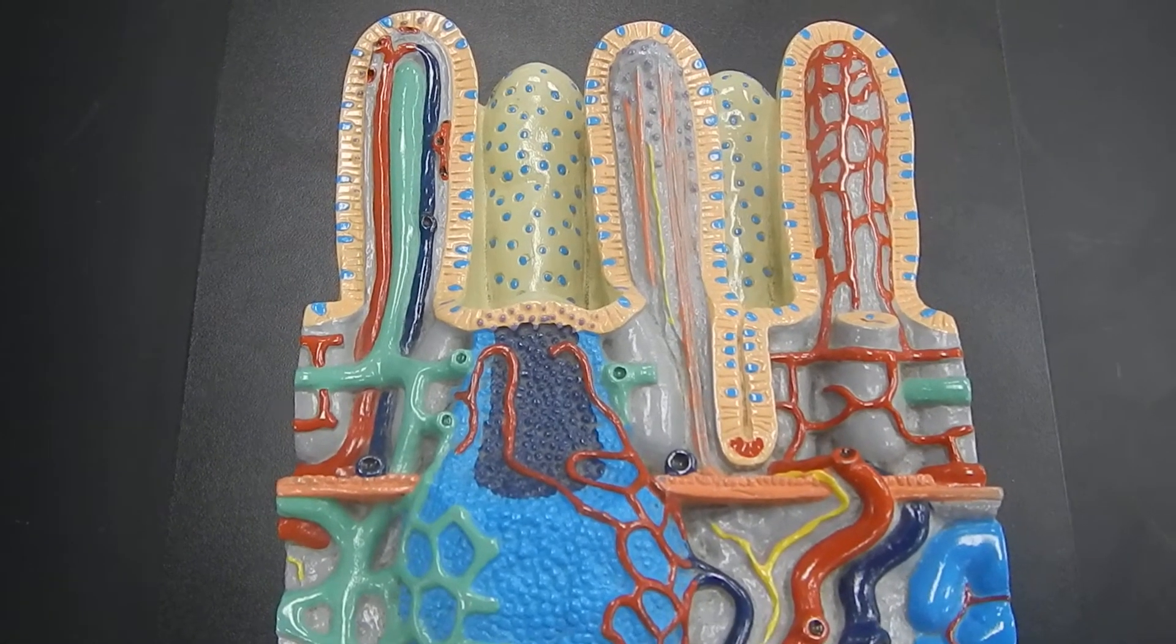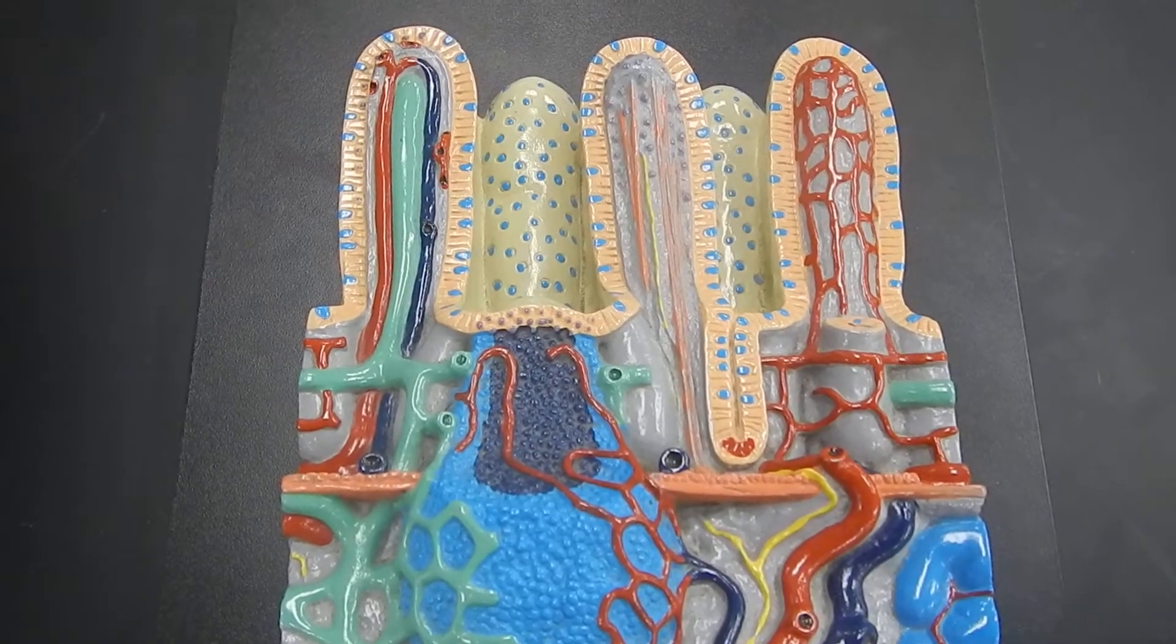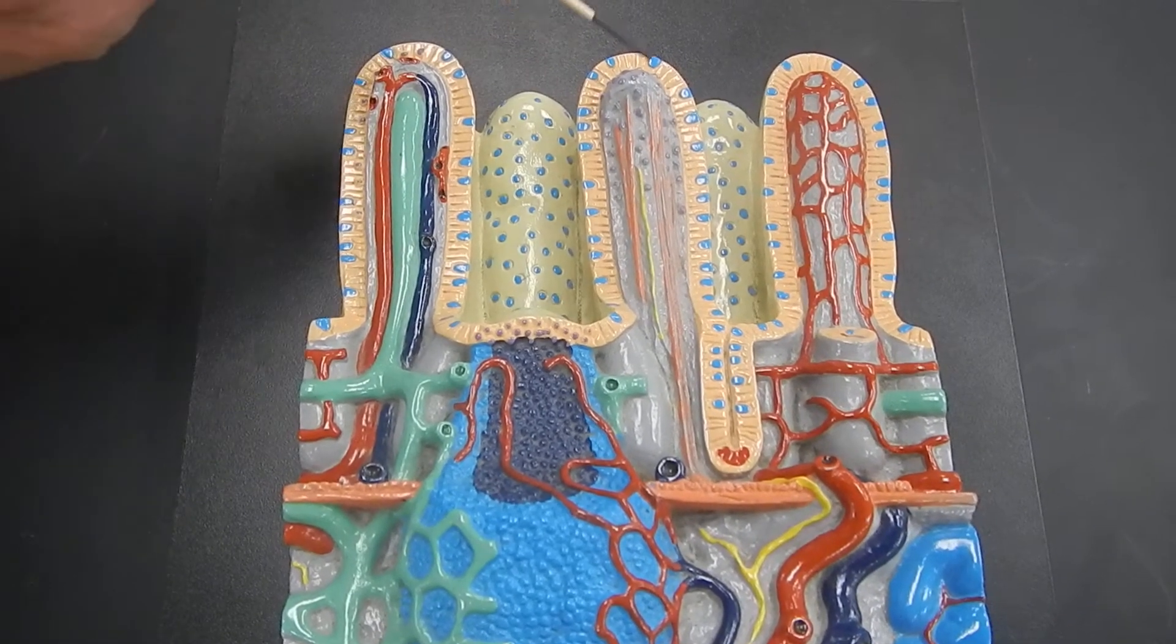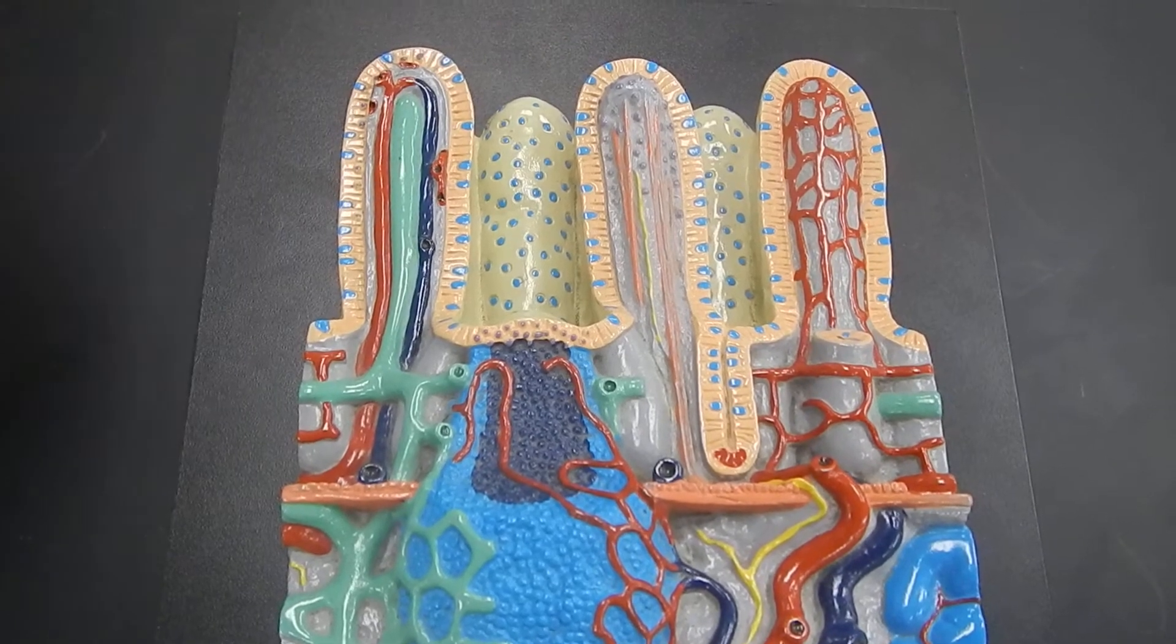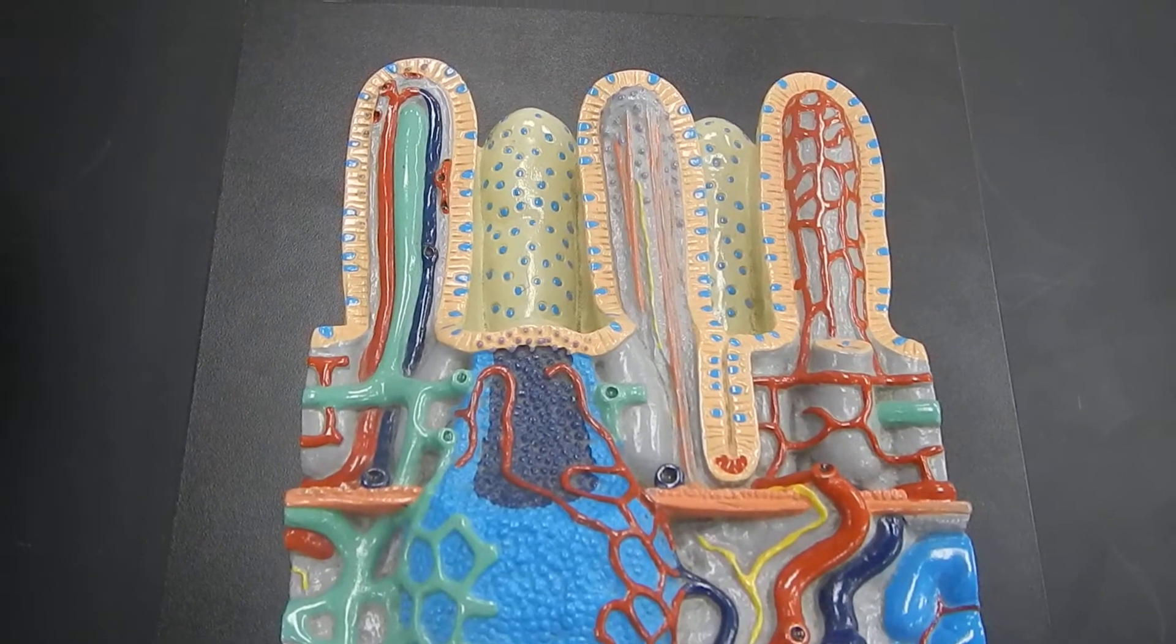And the plural form of villus is villi. So we have one, two, three villi. And the artist has drawn them differently to emphasize different structures inside of a villus.